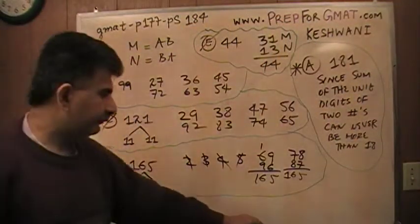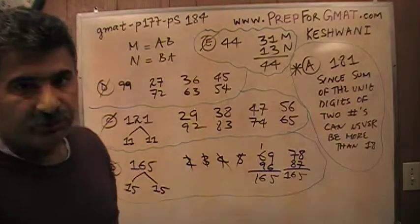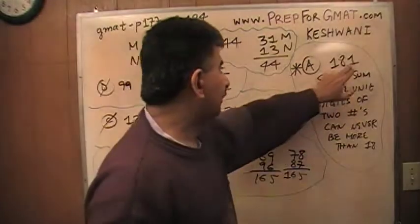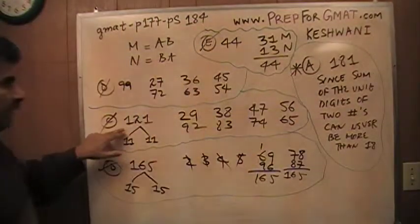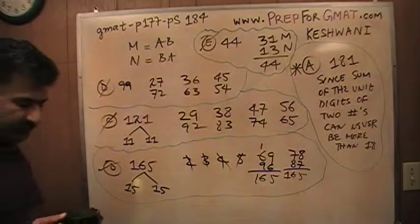That's it. 181 cannot be the sum of the two integers where their digits are the same but in reverse order. It's not possible. It has to end in 11. If it ends in 11, we're looking at this scenario. If it ended in 11, what we'll end up is 121. 181 is not possible. I hope you found it helpful.